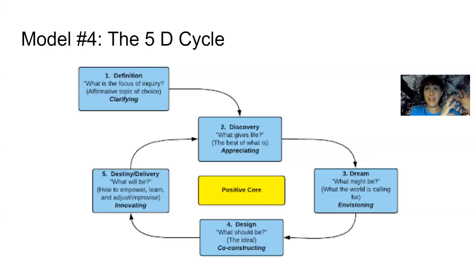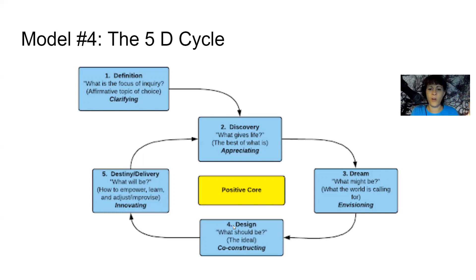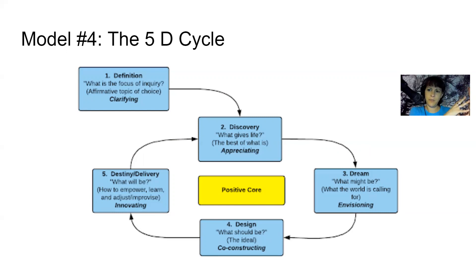Once you have clarity on what you actually want — not just how to remove a problem, but what to create — the fourth D is Design. This aligns well with STEM thinking. We're going to reverse-engineer it: understanding by design does that. Let's look at the outcome and determine what we need to do so that it happens.